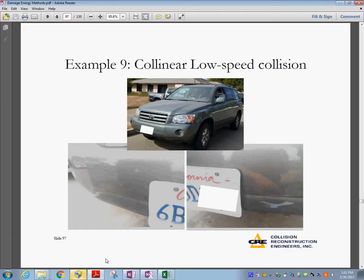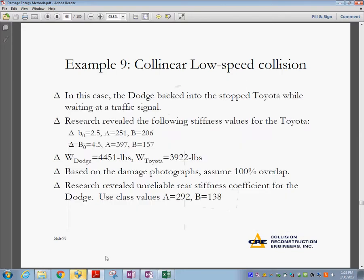So the Dodge backed into the stopped Toyota while waiting for a traffic light. He probably was too far in, and so he backed. He revealed the following values. V0 and A for the Dodge.